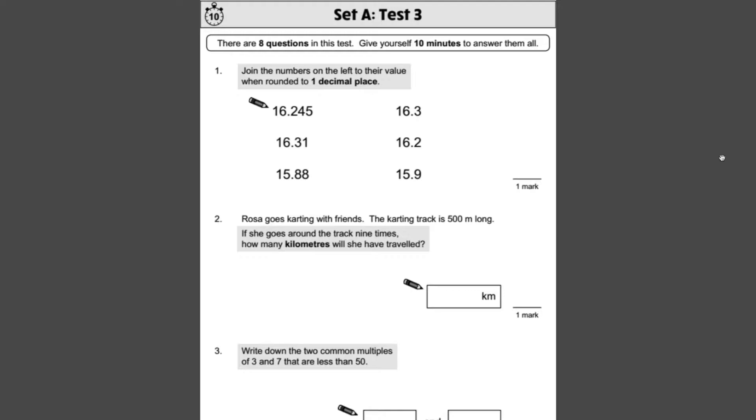Number one, join the numbers on the left to their value when rounded to one decimal place. If we are rounding to one decimal place, what that means is we're rounding to the nearest tenth. So that's this column here, just after the decimal point. So if we're going to round these, 16.245, we're going to be looking at this number here to see if it's five or above. If it's five or above, we move this tenth up one. If it's less than five, we just drop it back to what it is with some zeros on the end. Because we haven't got anything greater than five, five or above, we drop that down to 16.2.